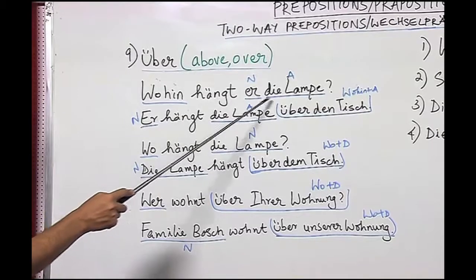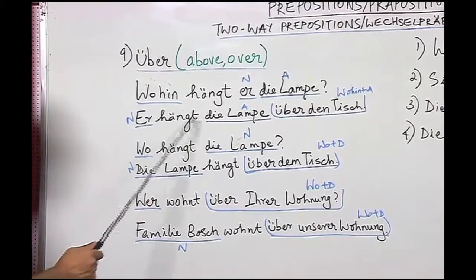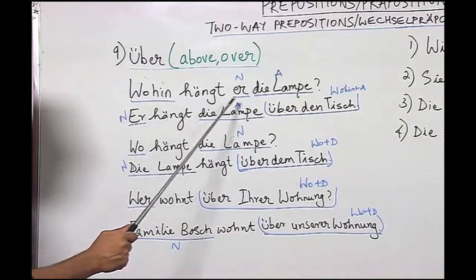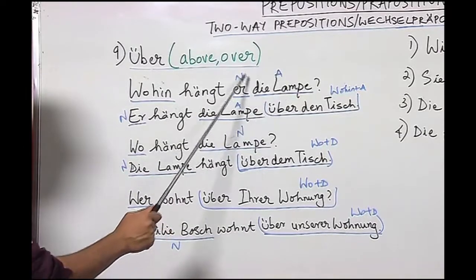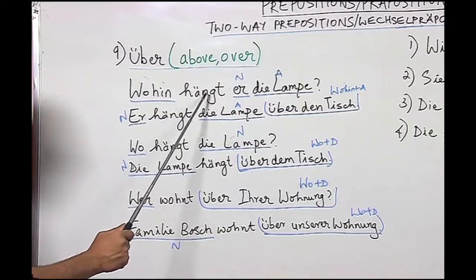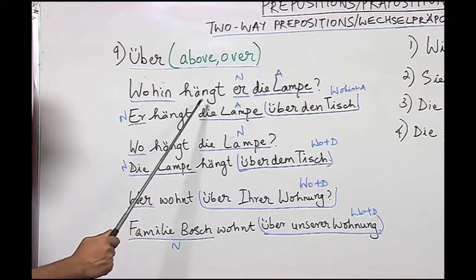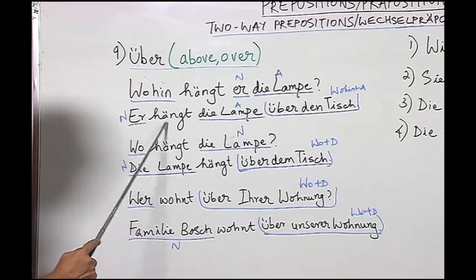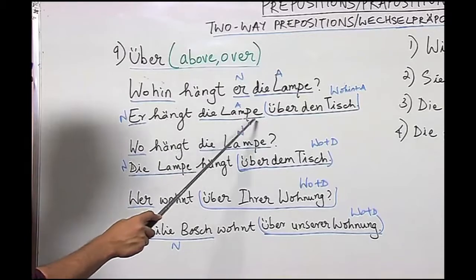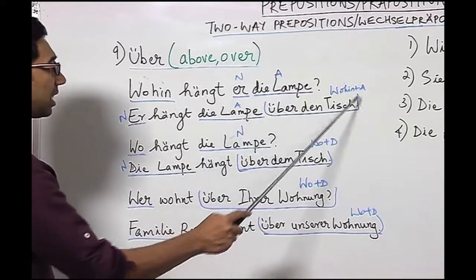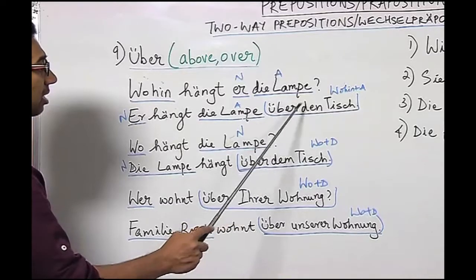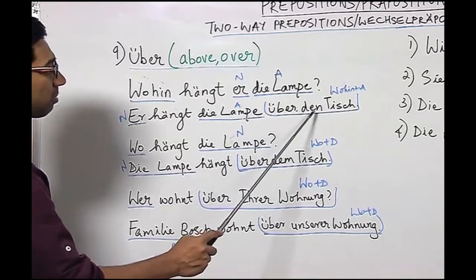Wohin hängt er die Lampe? Er hängt die Lampe über den Tisch. The question with 'wohin' is always accusative. We have the nominative 'er', the accusative 'die Lampe', and the verb 'hängen'. The verb 'hängen' can be either accusative or dative. In the accusative case here: Er hängt die Lampe über den Tisch. 'Über' is the accusative preposition. The article for Tisch is 'der Tisch', and in accusative along with 'über' it becomes 'den Tisch'.